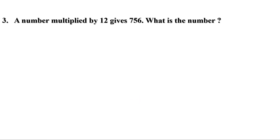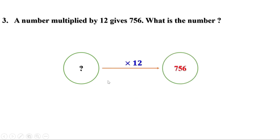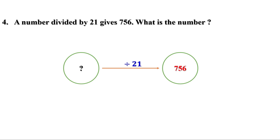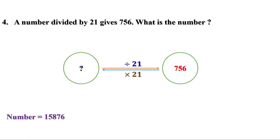Third problem: A number multiplied by 12 gives 756. What is the number? We don't know the number, but when it is multiplied by 12, we get 756. We need the number before multiplication, so divide 756 by 12. That is 63. The number is 63. Fourth problem: A number divided by 21 gives 756. What is the number? We don't know the number, but when it is divided by 21, we get 756. To get the number before division, do the reverse: multiply 756 by 21. We get 15,876. The number is 15,876.